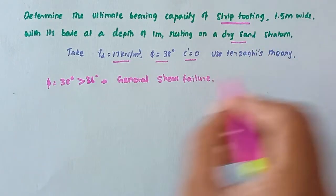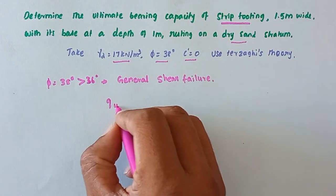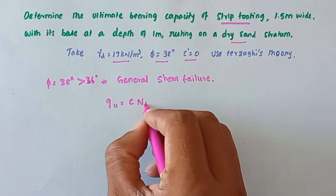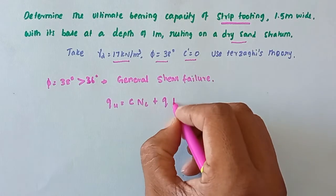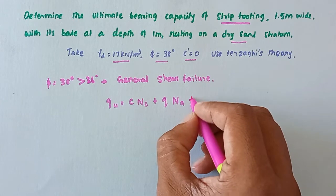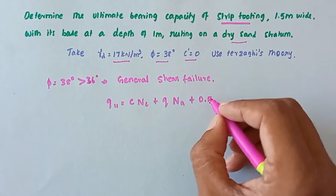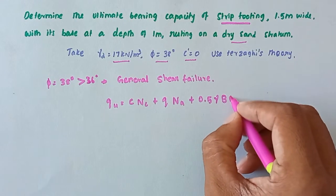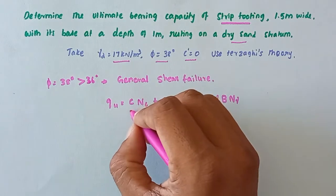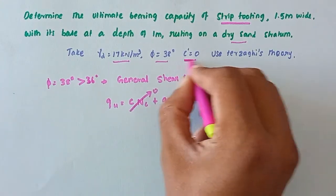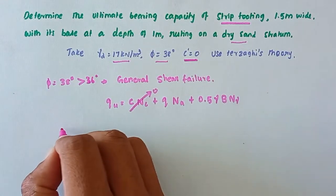we can take the Terzaghi equation: qu = c·Nc + q·Nq + 0.5·γ·B·Nγ. So now c = 0 because this is cohesionless soil. Now we can calculate